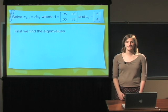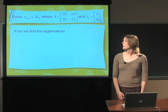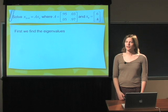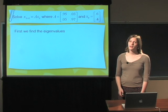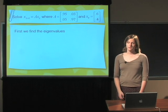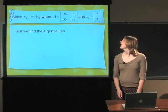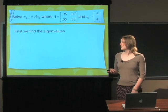In order to do that, we need to solve the vector equation x sub k plus 1 equals A x sub k, where A is a matrix describing the movement between the city and the suburbs, and x sub 0 is a vector describing our initial conditions.